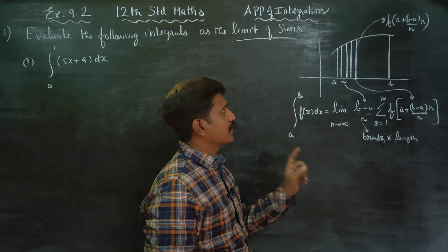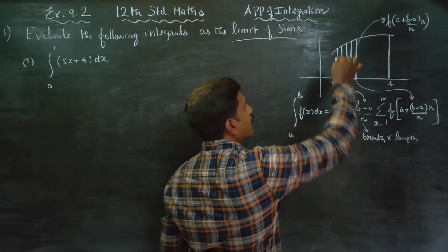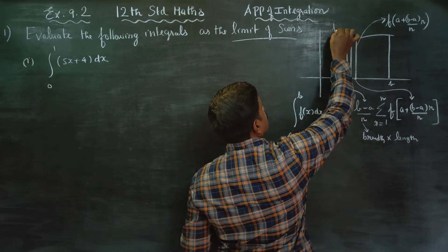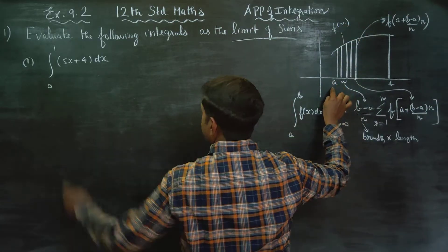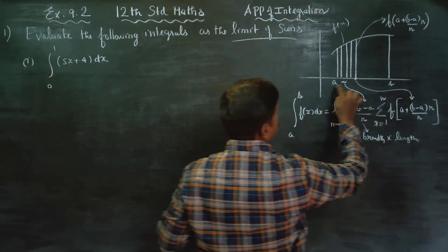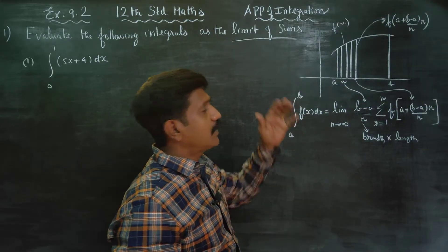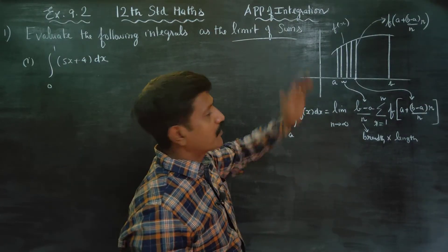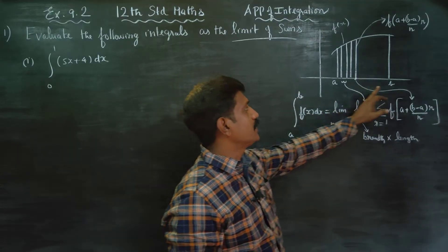Here we see one curve, f of x. We have a lower limit and an upper limit. When we integrate f of x from a to b, we get the area covered under the curve f of x.